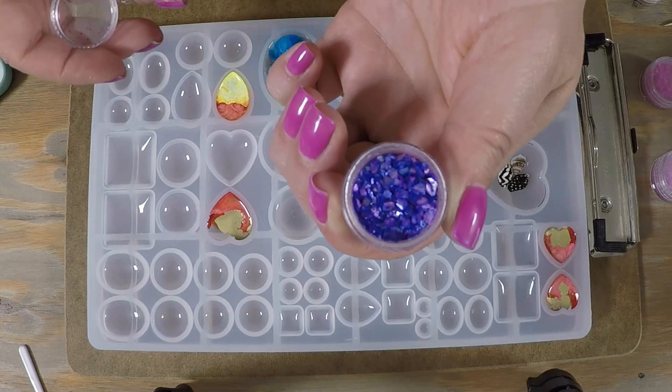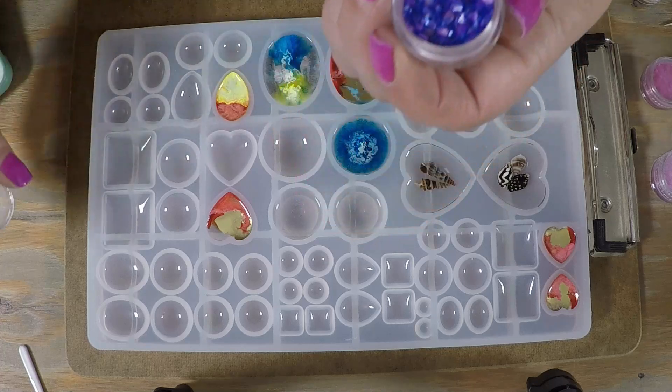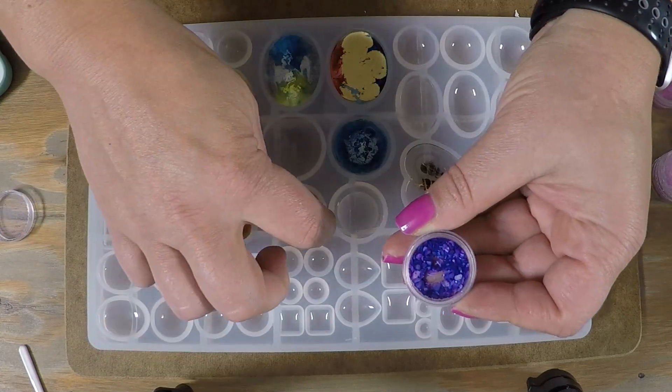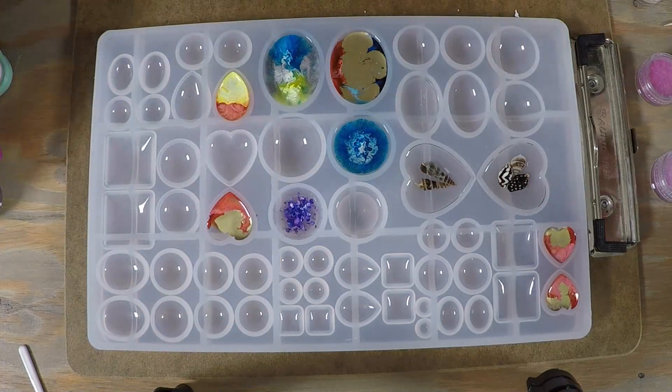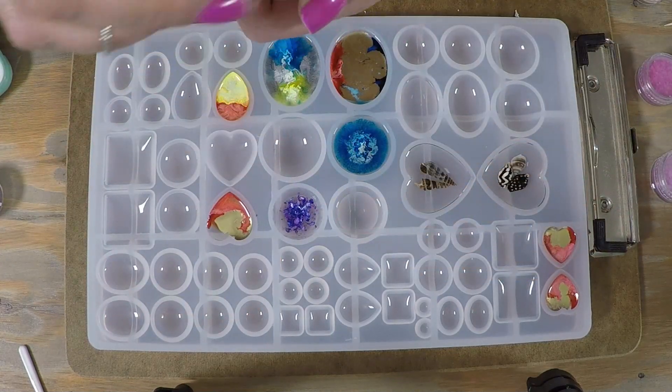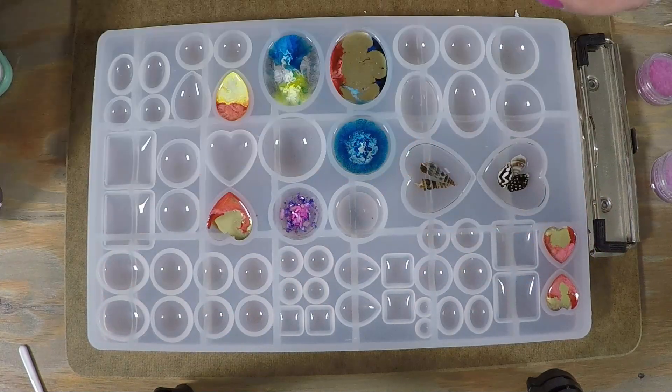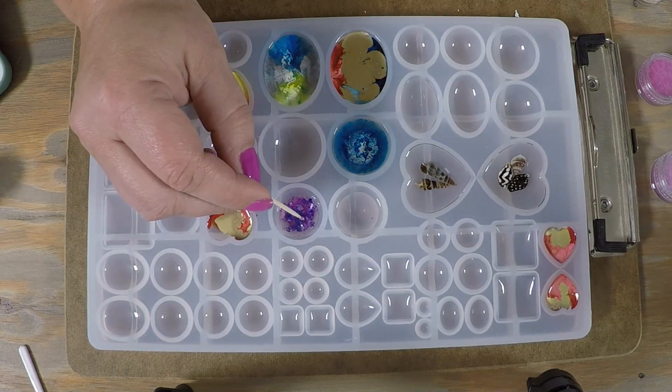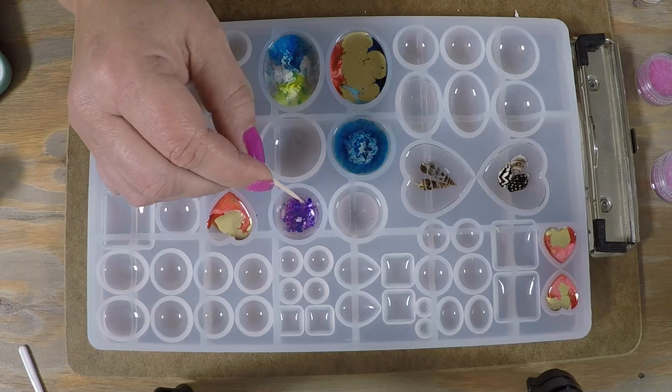I've got some purple and pink little shell flakes here, and I'm just adding them to one cavity, taking a toothpick, mixing it around, and making sure it's all spaced out and floating a little bit. That's why I let the resin sit—to let it set up just a little.